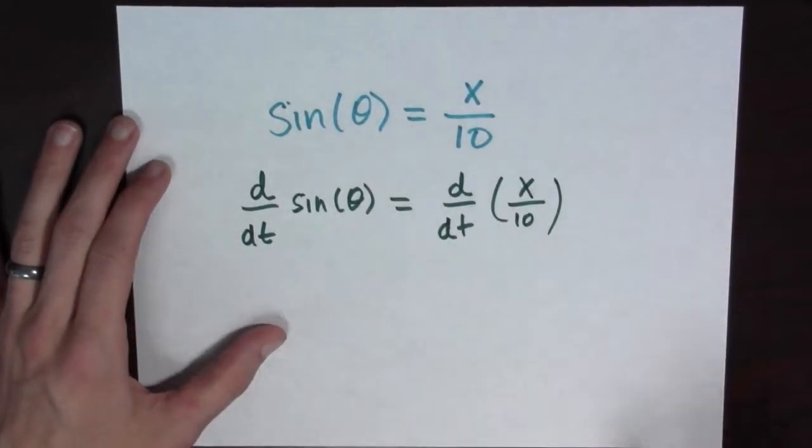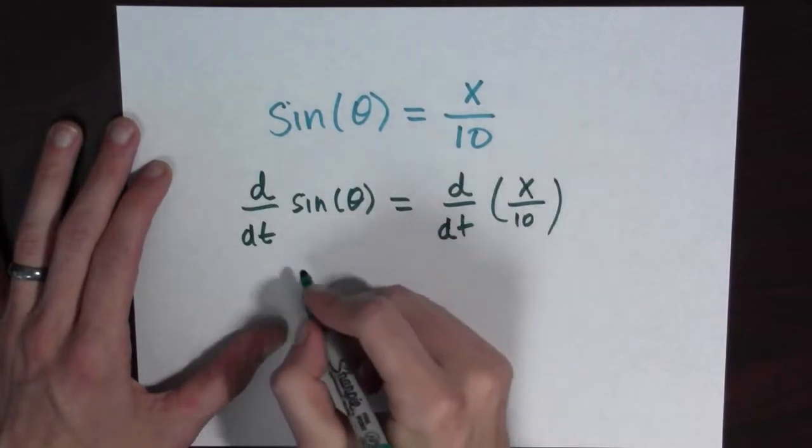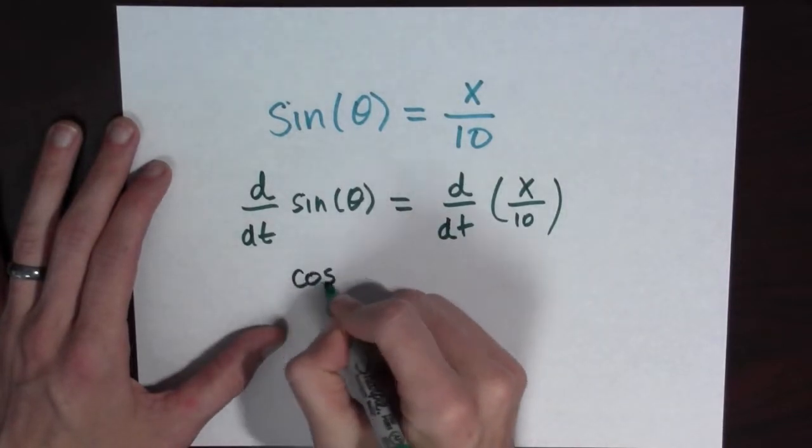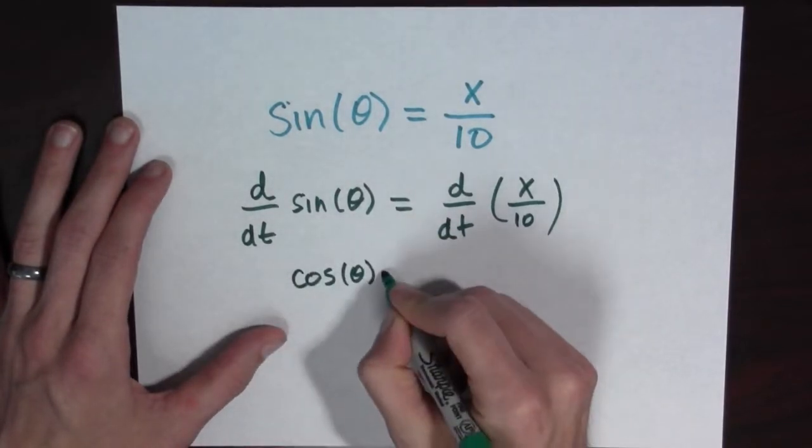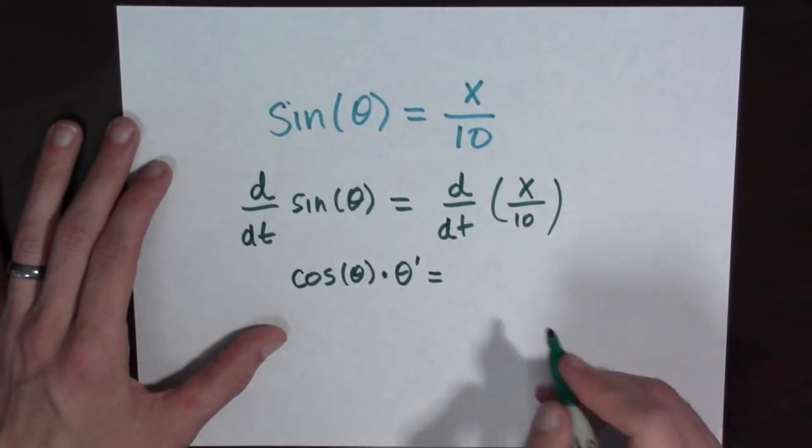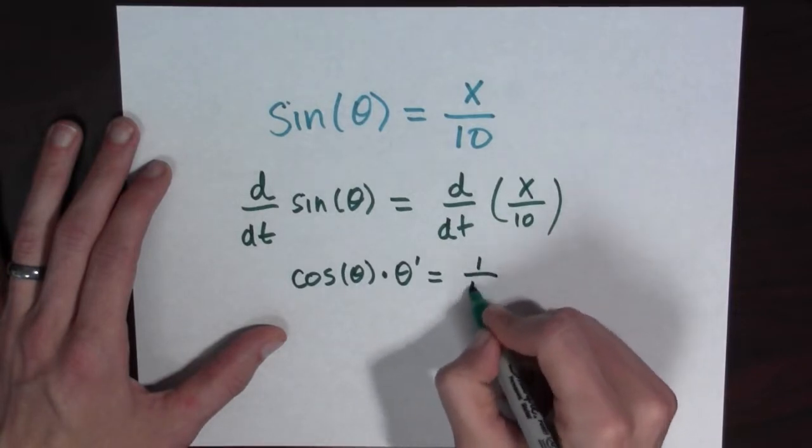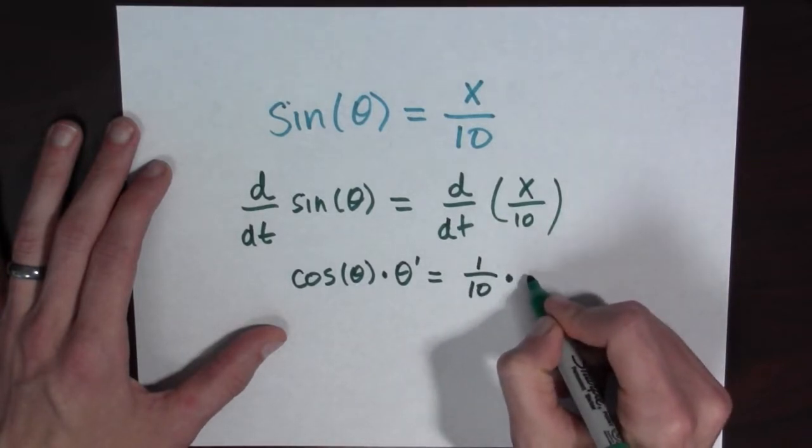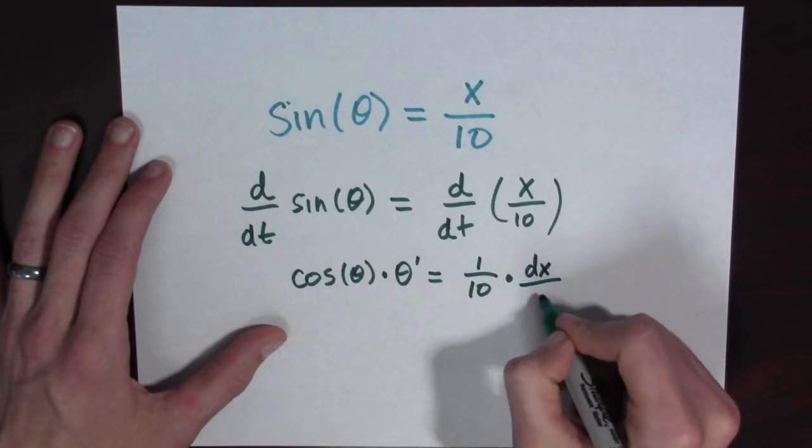d/dt of sine of theta is equal to d/dt of x over ten. Aha! So now the derivative with respect to t of sine theta is going to be cosine of theta times theta prime.